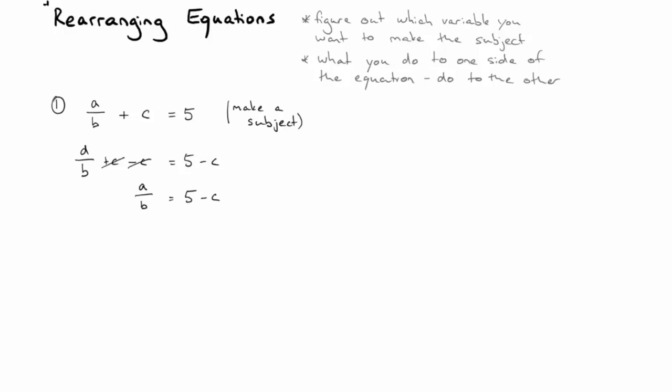To get the A alone, we would need to get rid of that B, and because A is divided by B, what we need to do is multiply both sides by B. Of course, this side needs to be treated as if it were in brackets. Divided by B, multiplied by B, they cancel. So we have A equals 5 minus C times B.